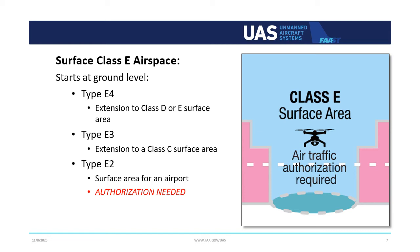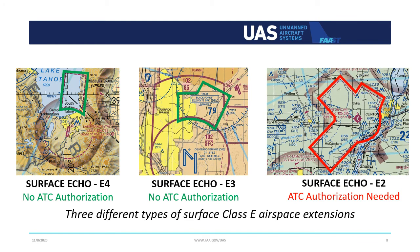We're going to talk about three types of Surface Class Echo airspace: Echo 4, Echo 3, and Echo 2. Only Echo 2 requires airspace authorization. Through the next few slides, I'll walk you through the different types of Surface Class Echo and how you can identify which type is in your area. We're going to start with Class Echo extensions.